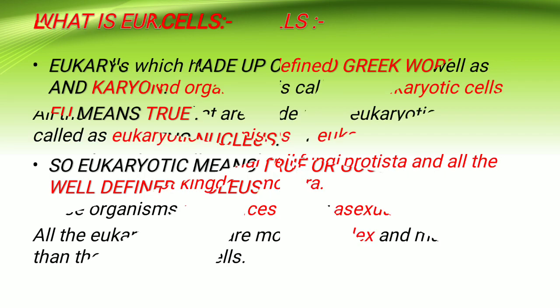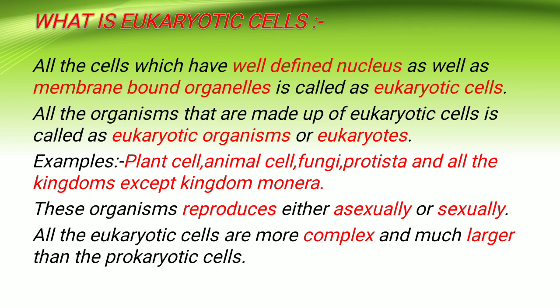What do you mean by eukaryotic cells? All those cells which have a well-defined nucleus as well as membrane-bound organelles are called eukaryotic cells. If you are asked in the examination what do you mean by eukaryotes, then you can say: all those organisms that are made up of eukaryotic cells are called eukaryotic organisms or eukaryotes.